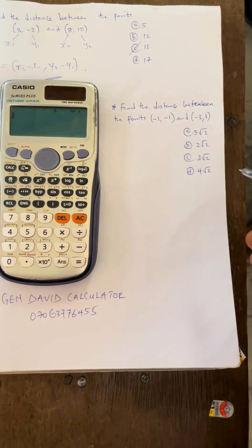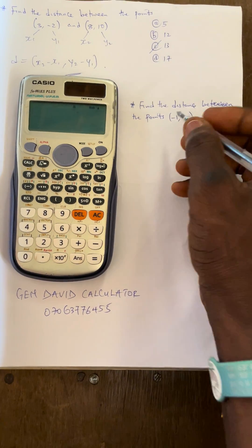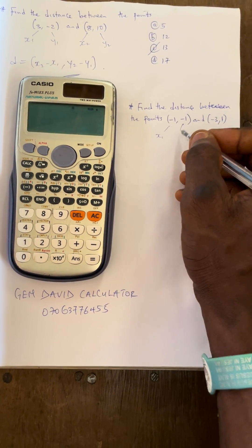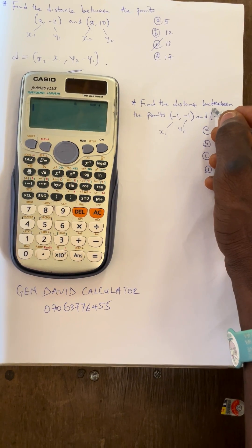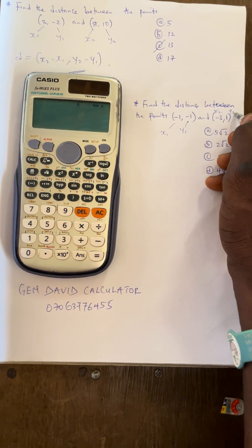The second question is the same thing. Find the distance between the points. This is the first point. This is the second point. So this is our x1, this is our y1, this is our x2, and this is our y2.